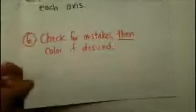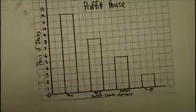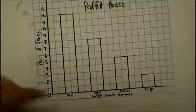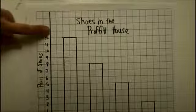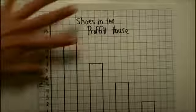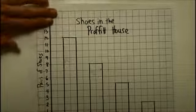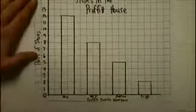And then, finally, I'm going to check for mistakes, then color if desired. So, my only mistake that I see here, I wish I had scooted this up a little higher, but I drew my y-axis a little taller than it needs to be. So, before I went over any of this in marker or colored pencil, I would erase this line up to here. And now, I could go ahead and color them in if I wanted to.